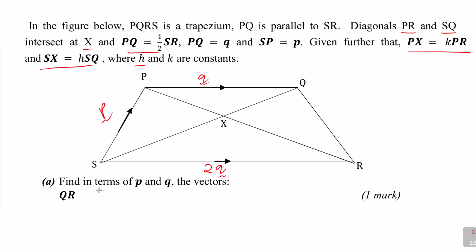Part A: find in terms of P and Q the vector QR. So you need to move from Q to R. To move from Q to R, you can follow the direction Q to S, which gives vector QS, then from S to R.